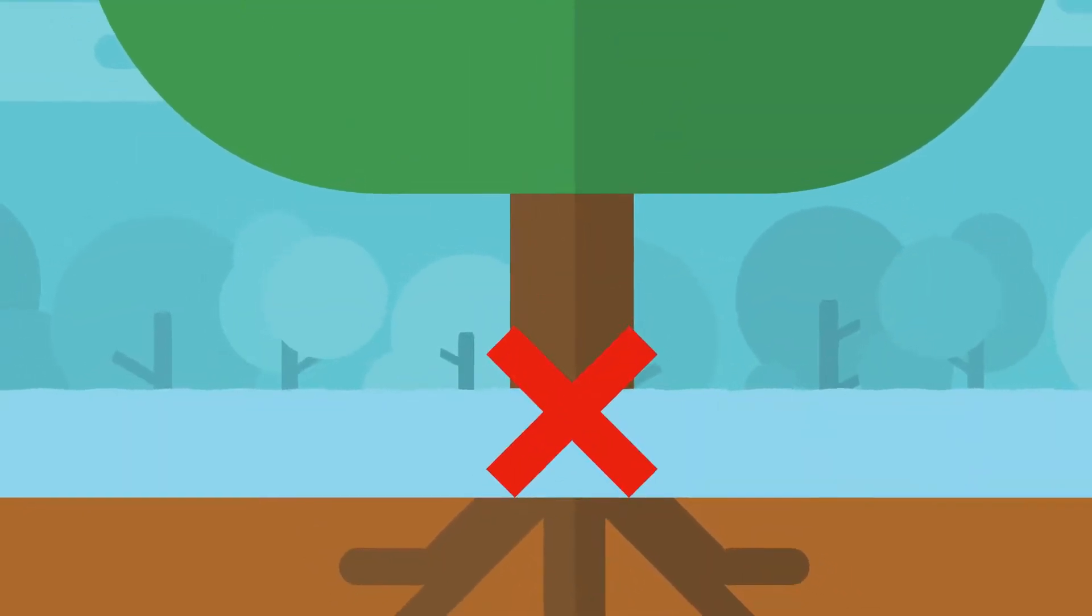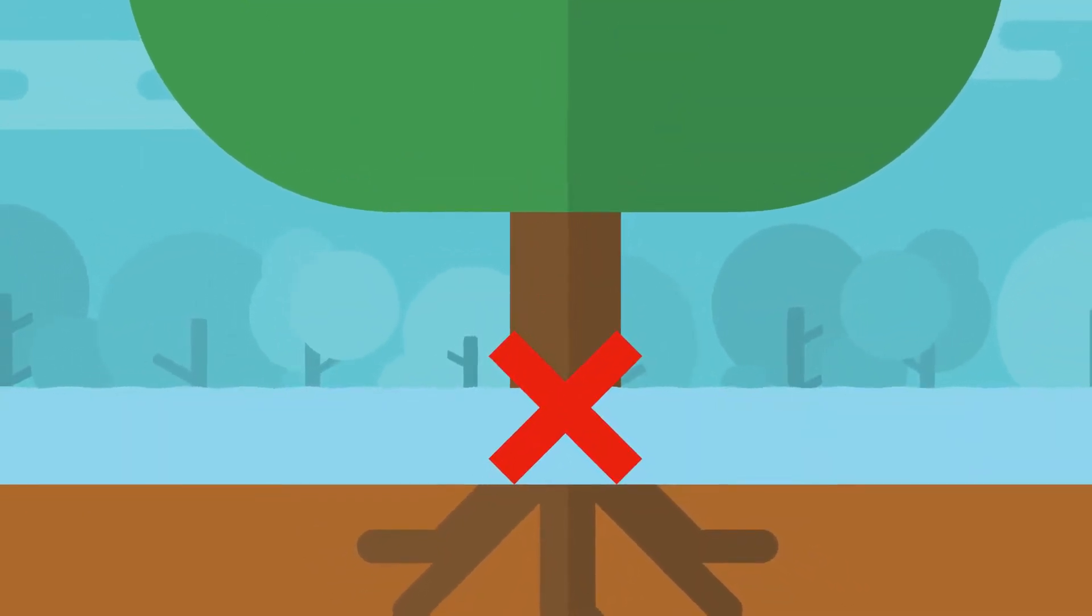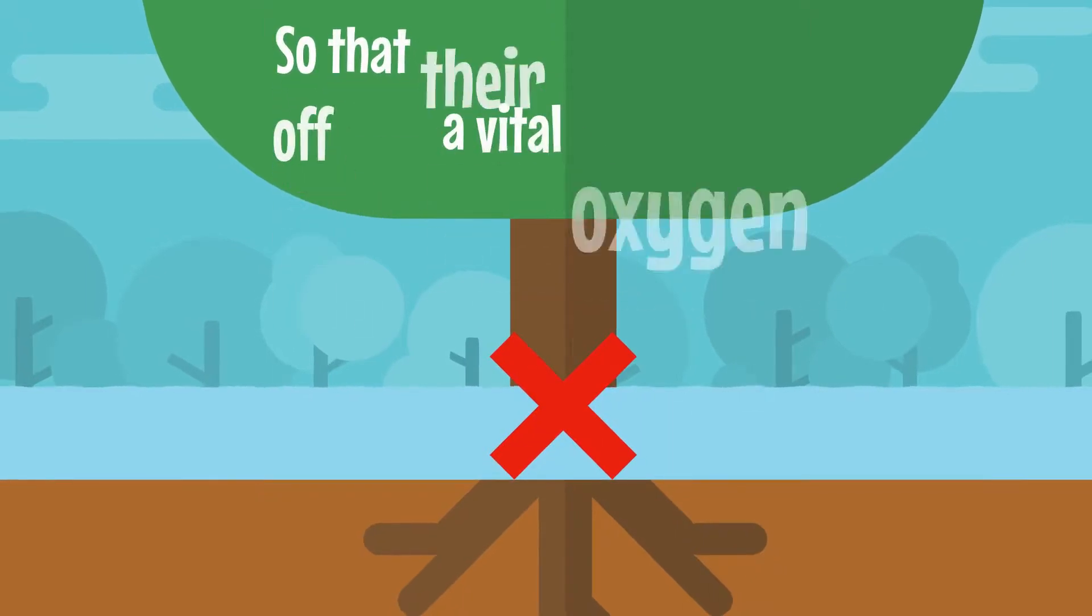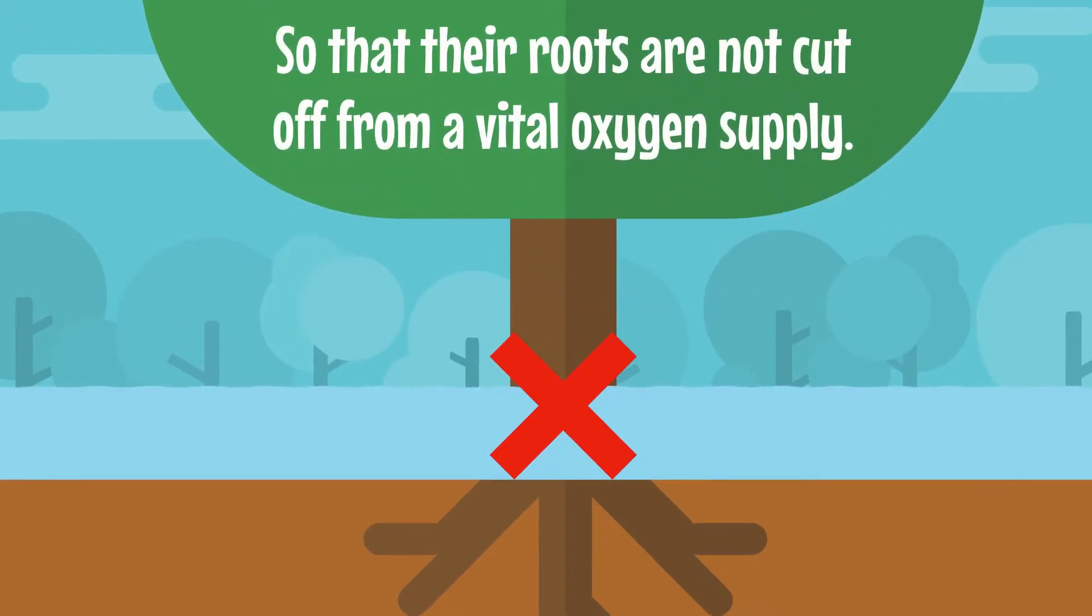That's why it's important that plants are not overwatered and the soil is loose, so that their roots are not cut off from a vital oxygen supply.